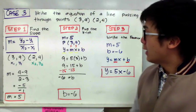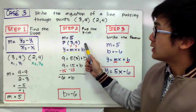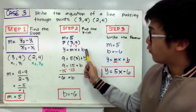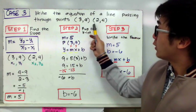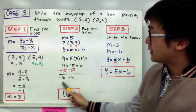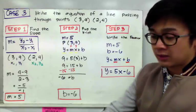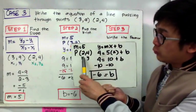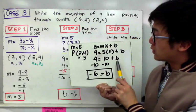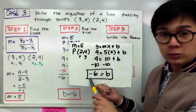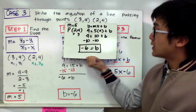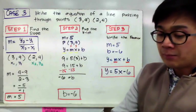Before moving on to step 3, I want to reiterate that it doesn't matter which point you pick. You can use (3, 9) or you can use (2, 4) to find the y-intercept. If you use (2, 4) instead of (3, 9), you will still get b = −6. So it doesn't matter which point you use — both points give you the same y-intercept using the same formula.